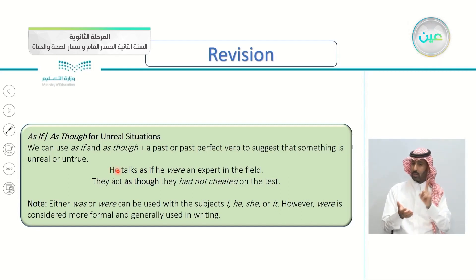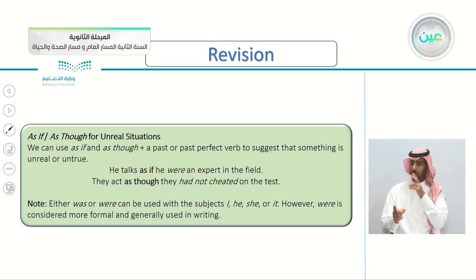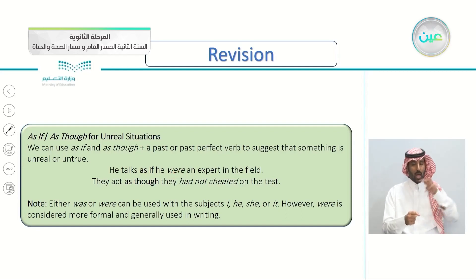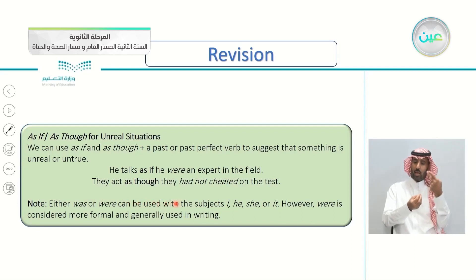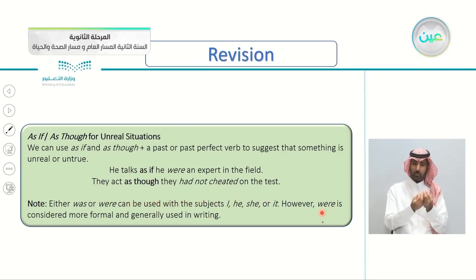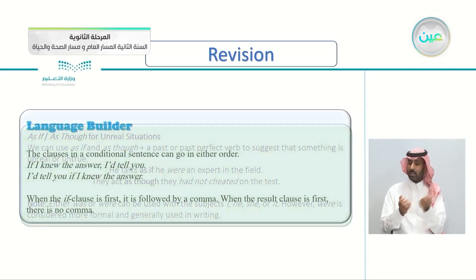For example: 'He talks as if he were an expert.' Is he an expert? No, of course not. Notice we said 'were' here because either 'was' or 'were' can be used with the subjects I, he, she, or it. However, 'were' is more formal and generally used, especially in writing.